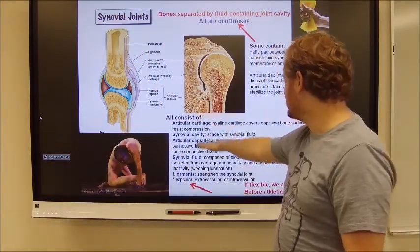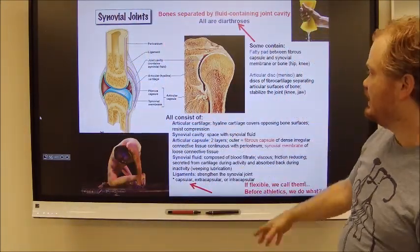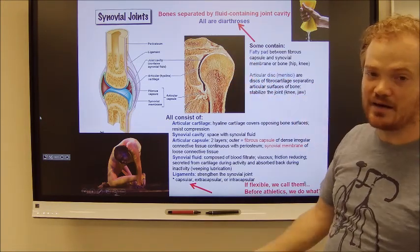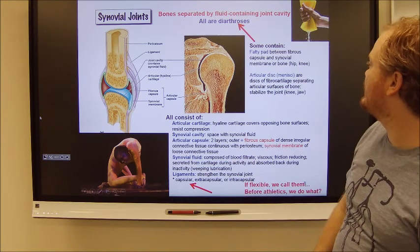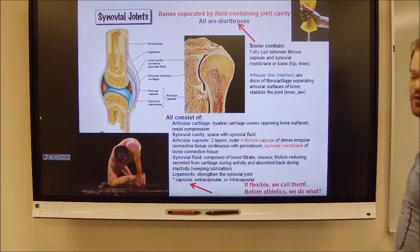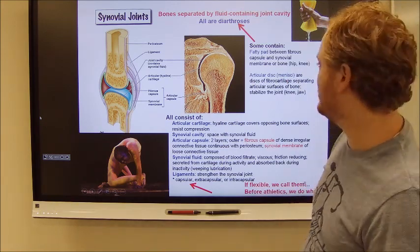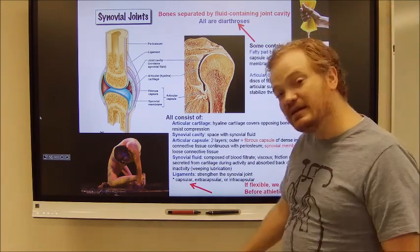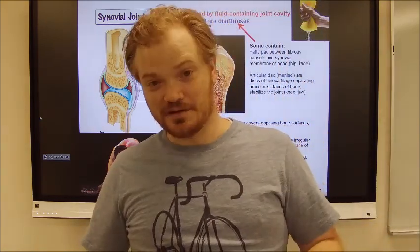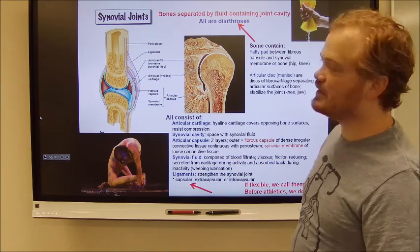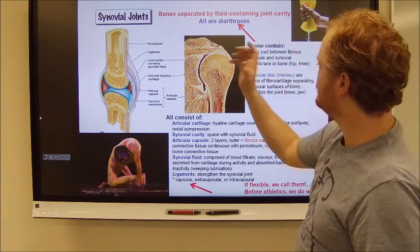This is a synovial joint. The nature of synovial joints, like those in my hand, is that they are diarthrotic — they are freely moving. You also find some other things in there sometimes: fatty pads that act as a cushioning mechanism, and articular discs like the meniscus in your knees, made out of fibrocartilage, that help surround and keep things together. But at the end of the day, if it's got synovial fluid — that being key — it is a synovial joint.